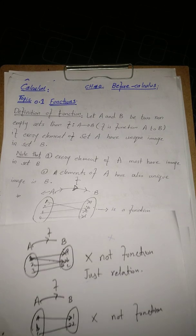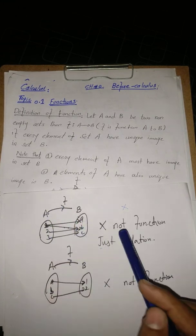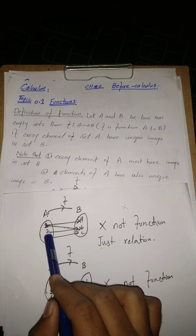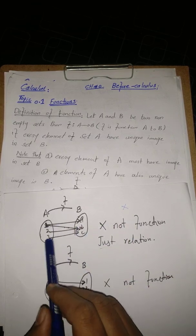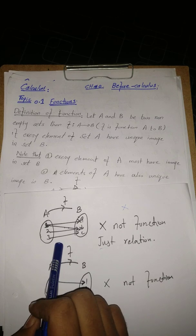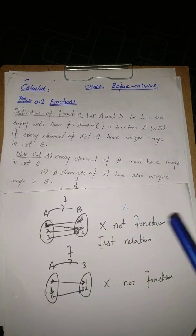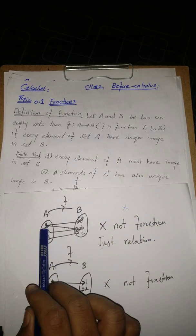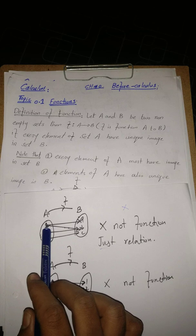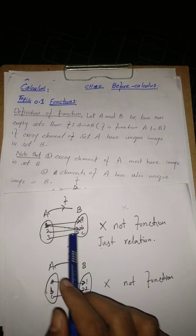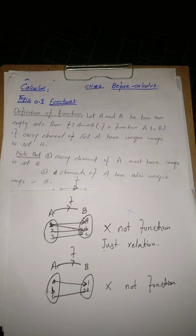In the second example, we check whether f is a function or not. Set A has elements {1, 2, 3} and set B has elements {a, b, c}. This does not fulfill the second condition, because element 1 of set A does not have a unique image — it has two images, a and b. So this is not a function because it does not fulfill the second condition.